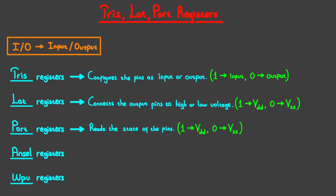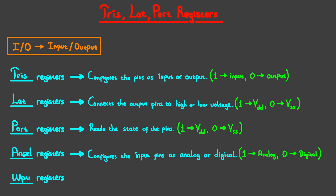Bits in the ANSEL registers — so ANSEL bits — will make the corresponding pins either analog or digital. Not every pin has analog capability, hence not every pin will have a corresponding ANSEL bit. Putting 1 in the ANSEL bit will make their corresponding pin analog input, while putting 0 there makes it digital input.